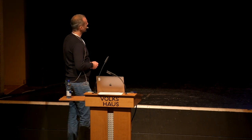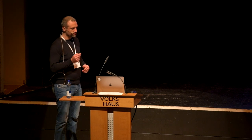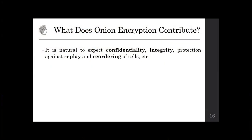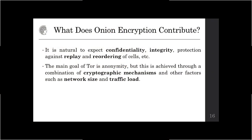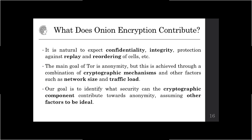What kind of security should we expect from an onion encryption scheme? It is natural to expect the usual security of a secure channel: confidentiality, integrity, and protection against replay and reordering. But the main goal of Tor is anonymity, which is achieved through a combination of factors — some cryptographic and some not. The cryptographic component is onion encryption, but anonymity also relies on network size and traffic load. Anonymity is not the right notion for onion encryption. Our goal was to identify what security the cryptographic component can contribute toward anonymity, assuming all other factors are ideal. We contend that the answer is circuit hiding, the notion we put forward.